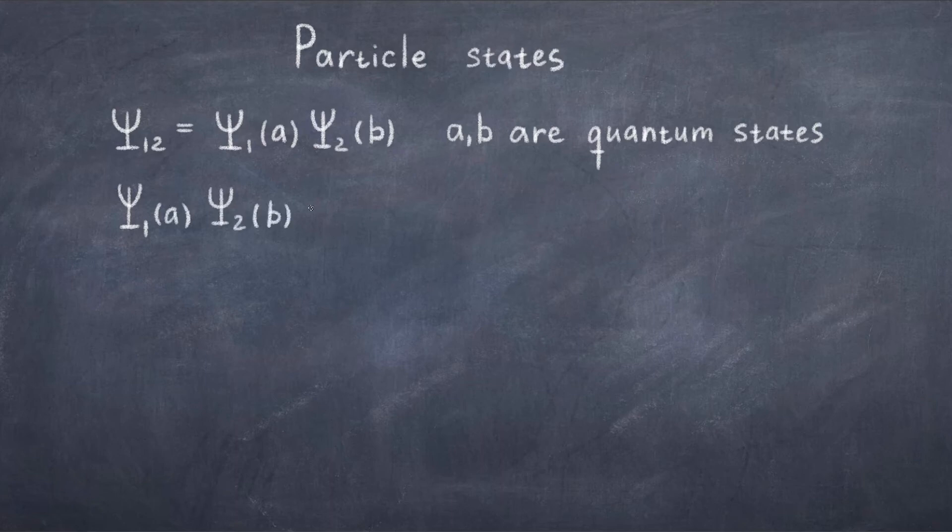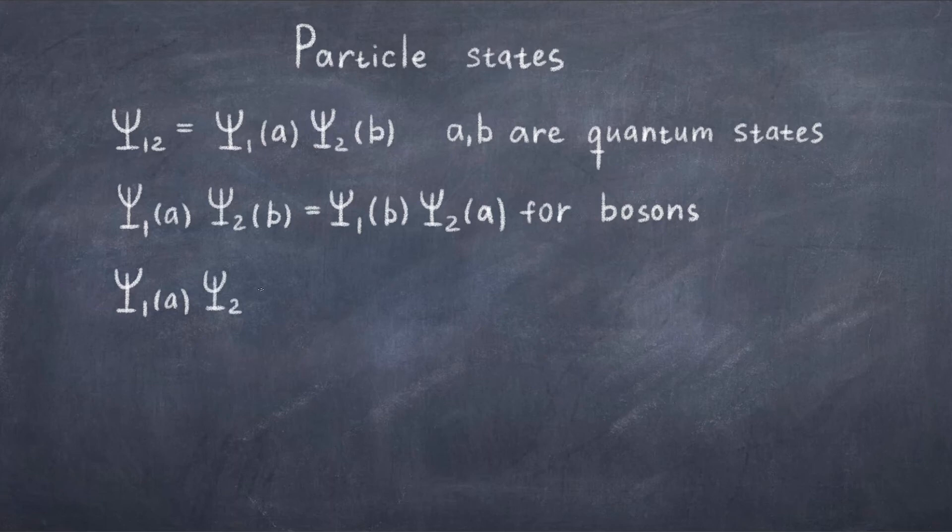Now to fix this, we must get back to the two types of particles. We must ask the question, what happens if we swap the state of the two particles around? For the boson the answer is absolutely nothing, we can thus write that psi 1 in state A times psi 2 in state B is equal to psi 1 in state B times psi 2 in state A. This is because bosons are symmetric.